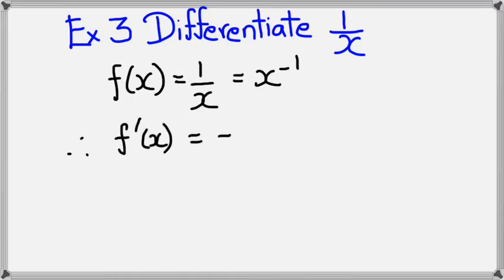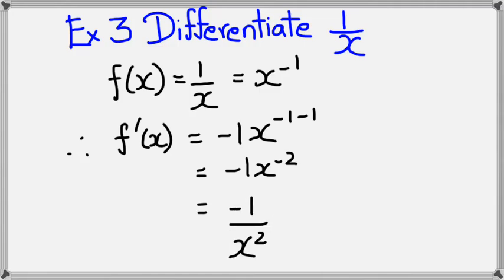And of course, simplifying this, I would get negative one x to the power of negative two. Simplifying it further, I would get negative one divided by x squared, and that's my final answer.